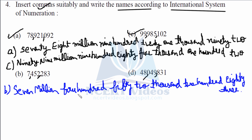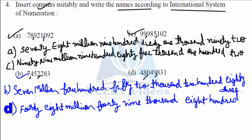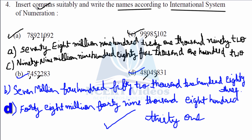Part b: seven million four hundred fifty-two thousand two hundred eighty-three. That makes part b. The last one, part d: forty-eight million forty-nine thousand eight hundred thirty-one. So we write thirty-one — T-H-I-R-T-Y — O-N-E. That completes question number 4 for the international system of numeration.